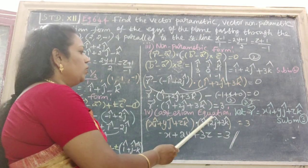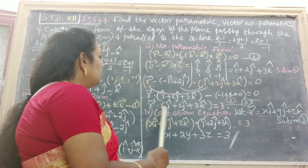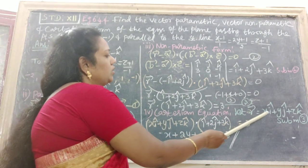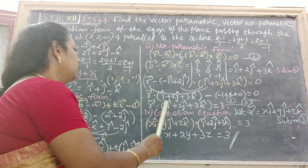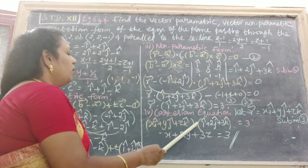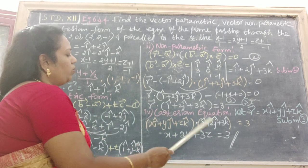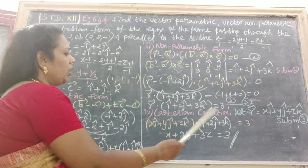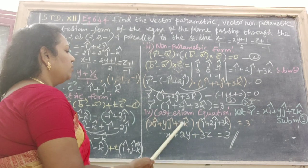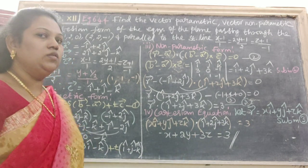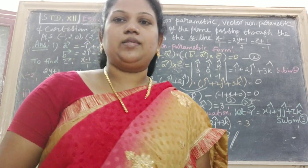Next one is Cartesian equation. Here, very easy. Let r vector equal to x i cap + y j cap + z k cap. Substitute in third equation in r vector. Here, multiply by dot product i cap, j cap, k cap. Therefore, we get the answer x + 2y + 3z = 3. Therefore, we get the required answer.